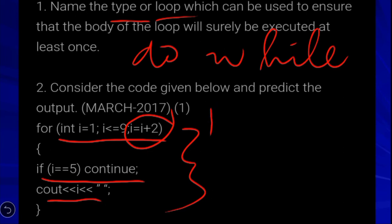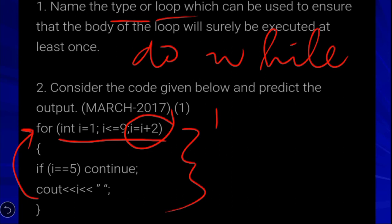The value of i is 1, so 1 is printed. Then i increments by 2 to become 3, and 3 is printed. Then i becomes 5, and since i equals 5, the continue statement skips printing 5. Then i becomes 7, and 7 is printed.